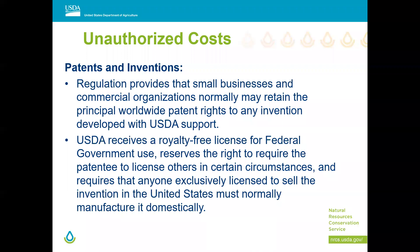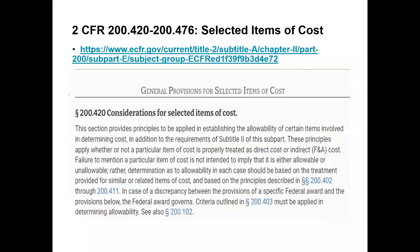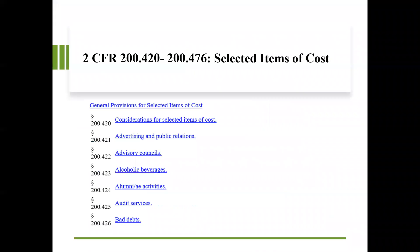There is a section on unauthorized costs at 2 CFR 200.420. You'll want to look through the selected items of cost there. When you go through it, you'll see things like: alcohol is not allowable, lobbying costs are not allowable. Each section — whether it's alcohol, alumni activities, audit services, or bad debt — tells you whether it's an appropriate budget item. Just click the link and read what's there.